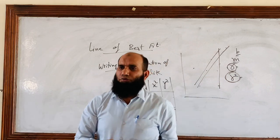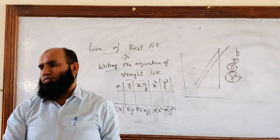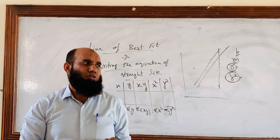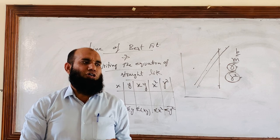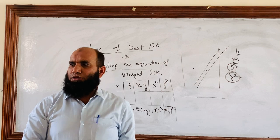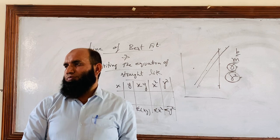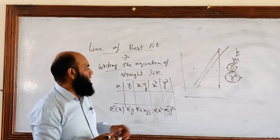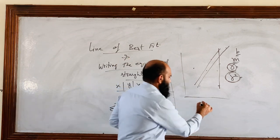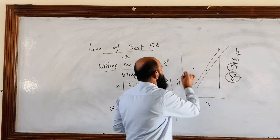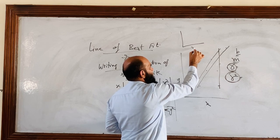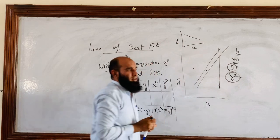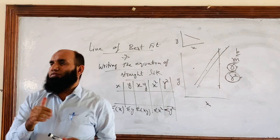We have to take the scale of the R value. Why are we taking the scale? Because in my previous class, I told you there are two types of R values. R may be positive, R may be negative. In case of positive, we will have a direct relation with the x-axis and y-axis. And in case of negative, there is an inverse relation.